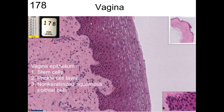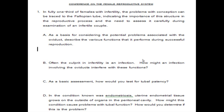There are stem cells along the bottom of the epithelium, connecting to the connective tissue below. There's a prickle cell layer — typical non-keratinized stratified squamous epithelium, kind of like skin on the outside.